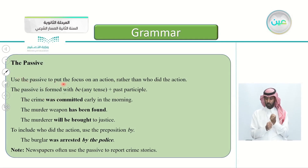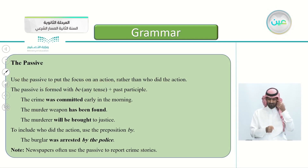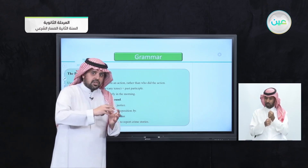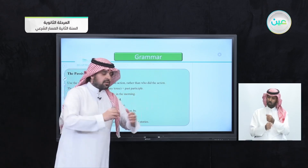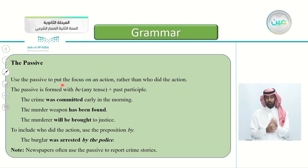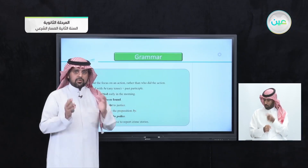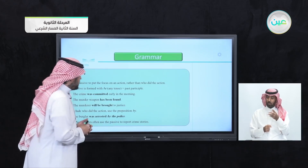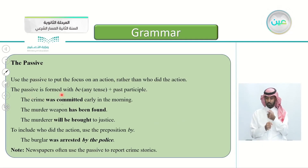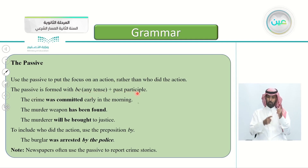We use the passive to put the focus on the action rather than the doer of the action. Whether we know the doer or not, we use it just to focus on the action itself. The passive is formed with 'be' in any tense, plus the past participle.